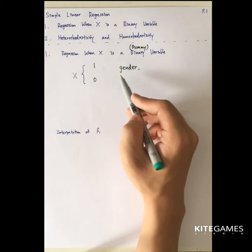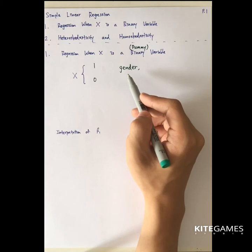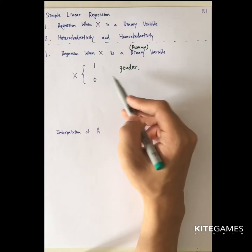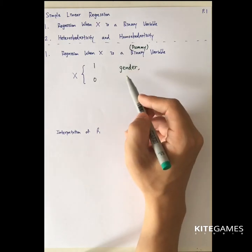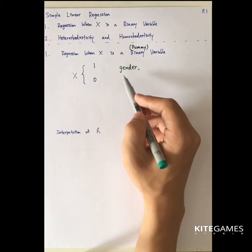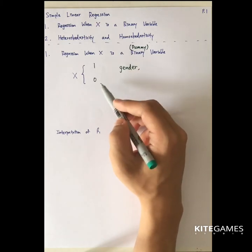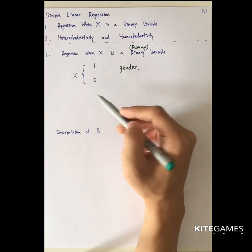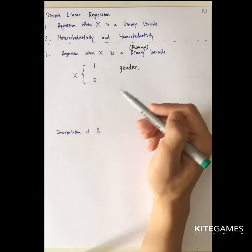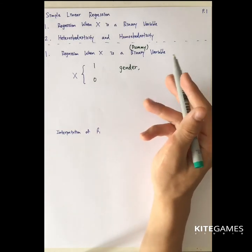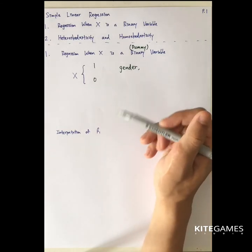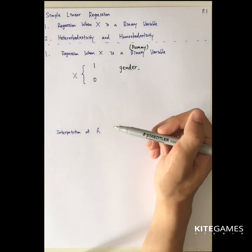In the gender case, assume that male equals 1 and if the person is female, we set it equal to 0. Then we can do the regression, and later we will take a look at the interpretation.